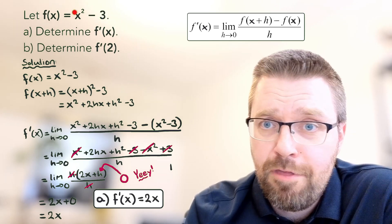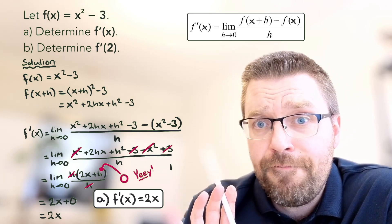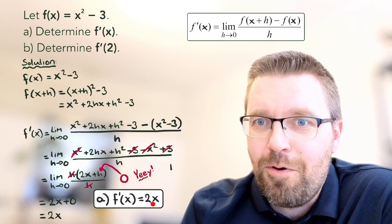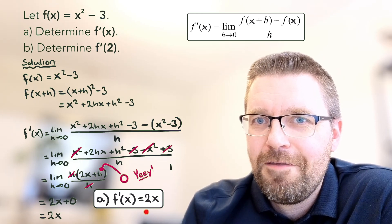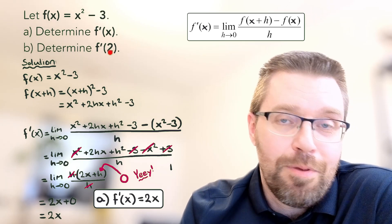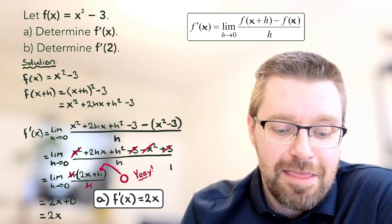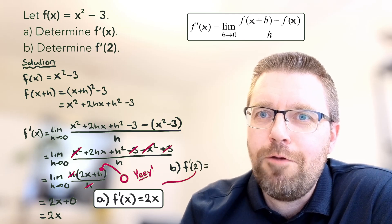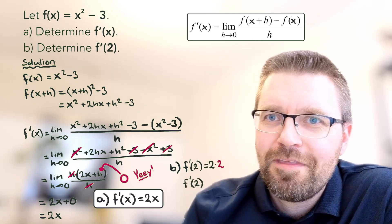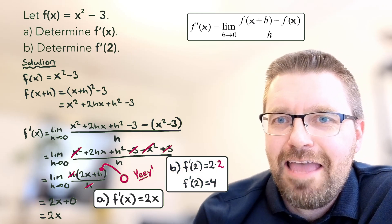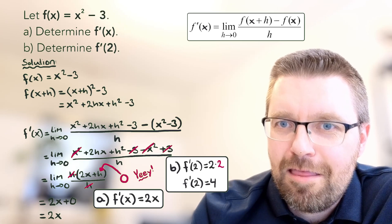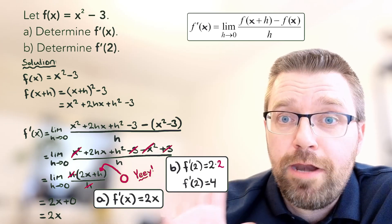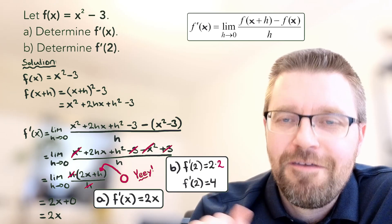This means that for the original function, at any point on the graph, you can calculate the slope by replacing x with the value of that point in the expression 2x. For question b, determine f prime of 2: we replace x with 2, so it's 2 times 2, which equals 4. So f prime of 2 equals 4. The slope when x equals 2 is 4. The rate of change when x equals 2 is 4 for that function.